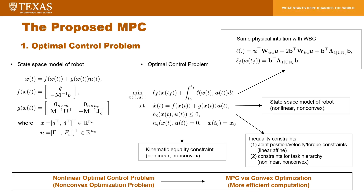We minimize the performance index subject to the state-space model, equality constraints, and inequality constraints. The equality constraint includes joint position, velocity, torque constraints, and task hierarchy constraints. Unfortunately, this optimal control problem is nonlinear and even non-convex in almost every part, except for the joint position, velocity, and torque constraints. Another challenge is formulating the constraint for task hierarchy. The main idea of this paper is to formulate the task hierarchy constraint using tracking errors, and then linearize and convexify the problem to convert it to a quadratically constrained quadratic program (QCQP), solved via convex optimization.